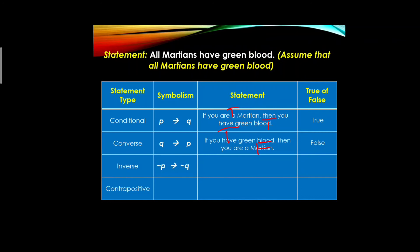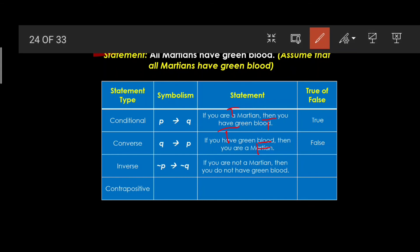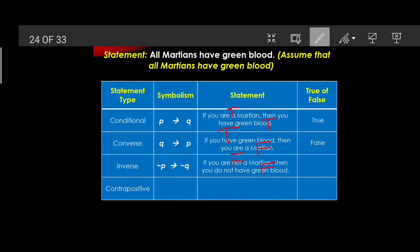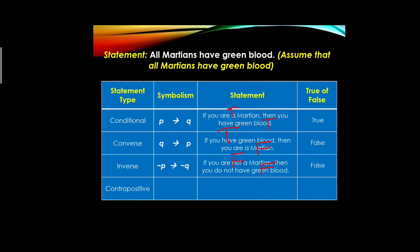For the inverse (∼p → ∼q): 'If you are not a martian, then you do not have green blood.' The hypothesis (you are not a martian) is false — negation of the true conditional hypothesis. The conclusion (you do not have green blood) is true — negation of the true conditional conclusion. So the truth value is false.